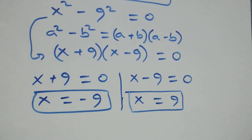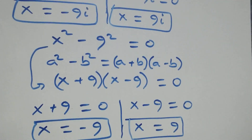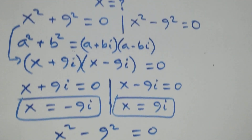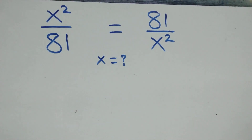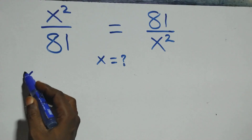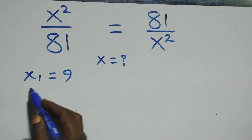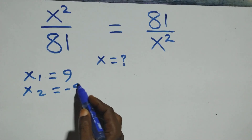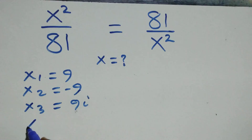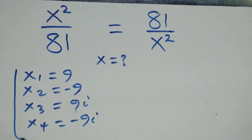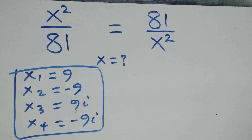Altogether we have four solutions — two real and two complex. Writing them out: x₁ = 9, x₂ = −9, x₃ = 9i, x₄ = −9i. Now let's check whether these satisfy the given problem.